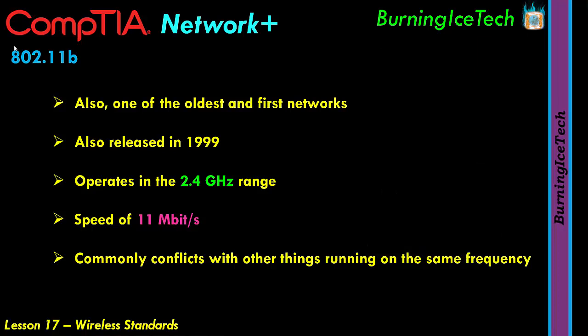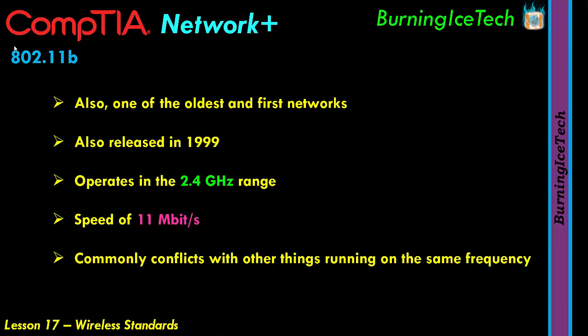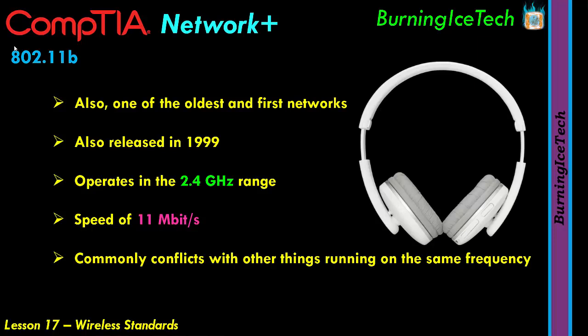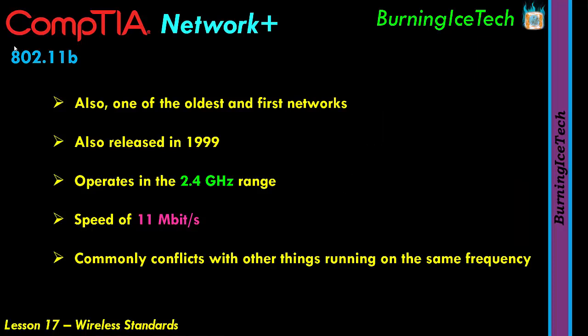Other things that run at 2.4 gigahertz include microwave ovens. It's usually only a problem once you actually turn the microwave on to heat something up — that's when it runs at 2.4 gigahertz. Bluetooth devices like wireless headsets also operate at 2.4 gigahertz, as do baby monitors, just to name a few. All of these things will be a problem if they're too close to your router or access point operating at this 2.4 gigahertz — they would basically cancel each other out.